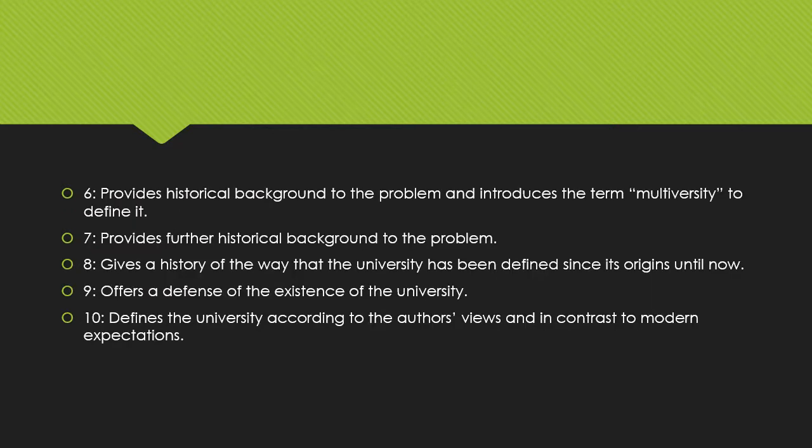Looking at the function of the next few paragraphs: paragraph six provides historical background to the problem and introduces the term 'multiversity.' Paragraph seven provides further historical background. Paragraph eight gives a history of the way the university has been defined from its origins until now. Paragraph nine offers a brief defense of the existence of the university. And paragraph ten defines the university in contrast to modern expectations, instead in line with the authors' beliefs about what the university should do. So we're focusing on the purpose of each paragraph within the argument.